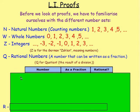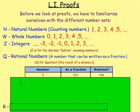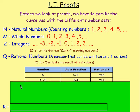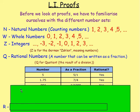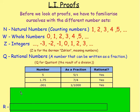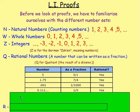I've got a little example here with different numbers. 5 — you can write that as a fraction: 5 over 1, so it's rational. 1.75 — you can write that as a fraction: it's 7 over 4, so that is rational. 0.001 — you can write that as a fraction: it's 1 over 1,000, so that is rational. 0.1111... — you can write that as a fraction: that would be 1 over 9, so it's also rational.